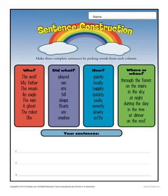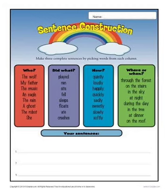Considerable confusion arises when this distinction of levels is not made — when what is really a general definition is in effect presented as though it were a language-particular definition. This happens quite frequently in traditional grammar, especially traditional school grammar. For example, the standard traditional definition of a noun as 'the name of a person, place, or thing' is commonly presented as though it provided the language-particular criteria for deciding which words in English are nouns. In fact it should be understood as providing a general definition, not a language-particular one.